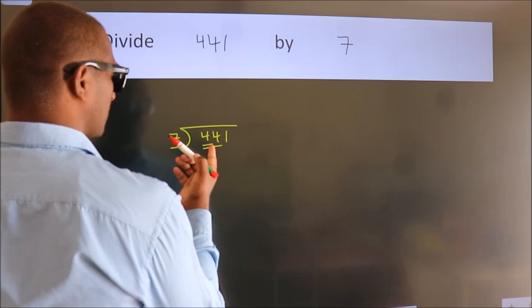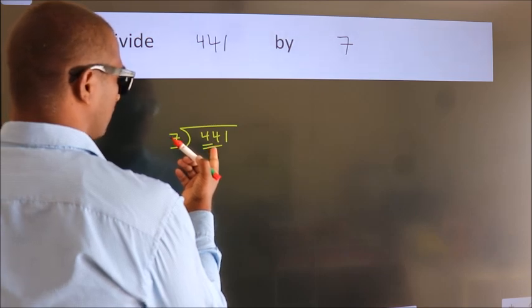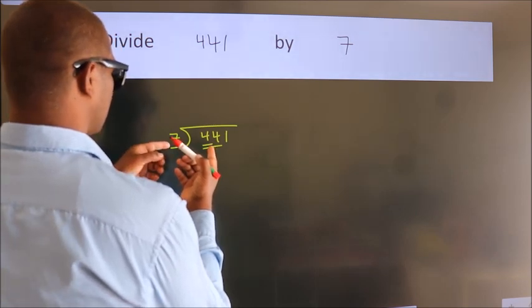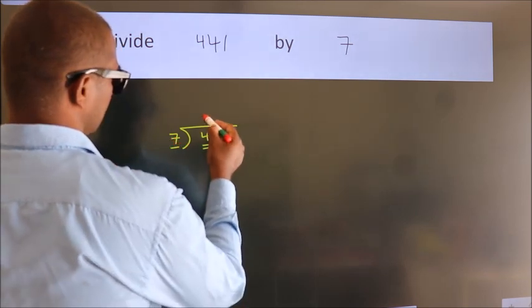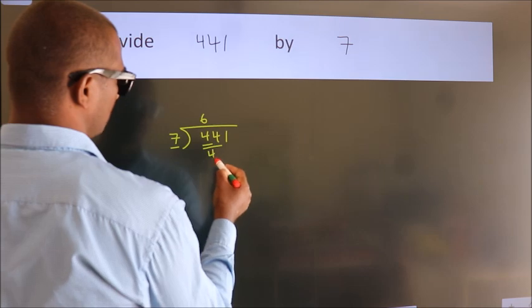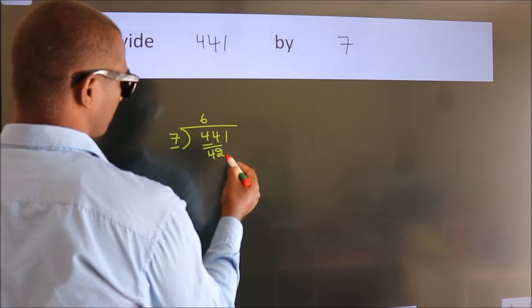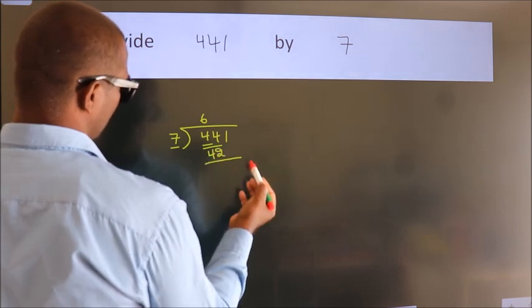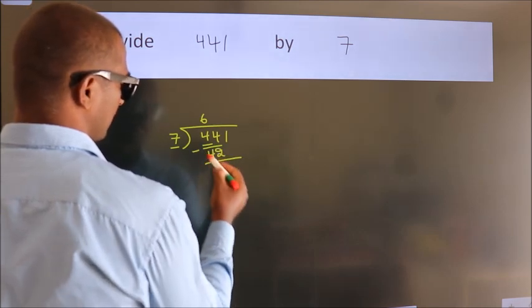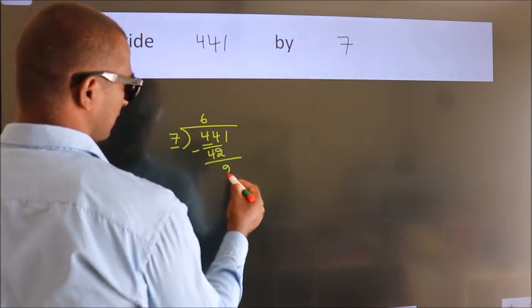A number close to 44 in the 7 times table is 7 times 6, which is 42. Now we should subtract. We get 2.